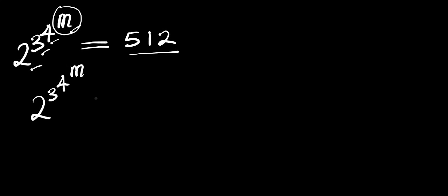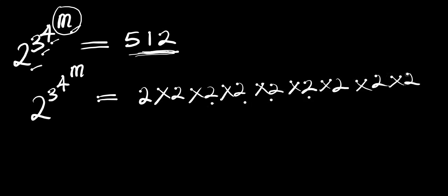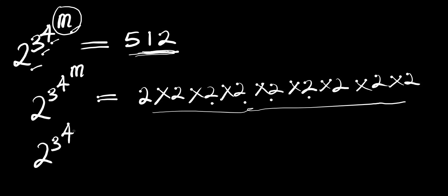We can rewrite 512 as a product of multiples. 512 is simply 2 times 2 times 2 times 2 times 2 times 2 times 2 times 2 times 2 — nine 2s. If you multiply this out, this will give you 512. So we have 2 to the power of 3 to the power of 4 to the power of m equals this.